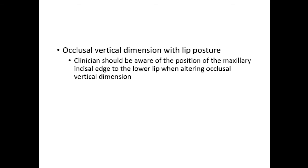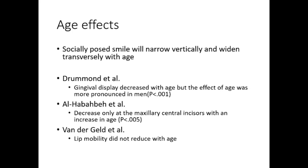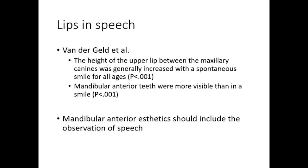The effect that altering the occlusal vertical dimension has on posture and smiles has also been investigated. Clinicians should be aware of the position of the maxillary incisal edge to the lower lip when altering occlusal vertical dimension. A socially forced smile will narrow vertically and widen transversely with age. Banzak et al. reported the height of the upper lip between the maxillary canines was generally increased with a spontaneous smile than during speech for all ages. In contrast, the mandibular anterior teeth were more visible in speech than in a smile.